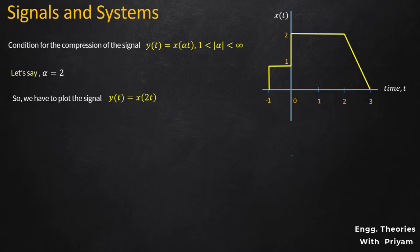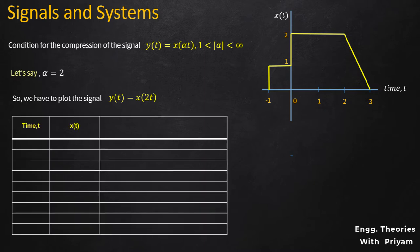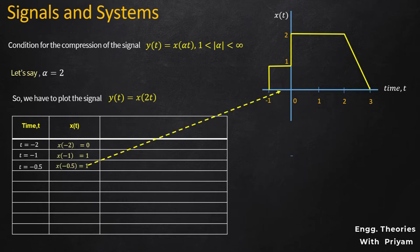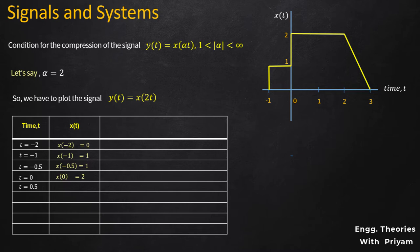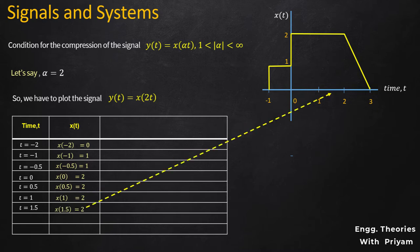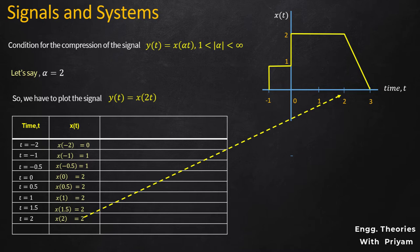We will make a table to observe different values of X(T) at different time instants. When T = -2, X(-2) = 0. When T = -1, X(-1) = 1. When T = -0.5, X(-0.5) = 1. When T = 0, X(0) = 2. When T = 0.5, X(0.5) = 2. When T = 1, 1.5, and 2, X(T) = 2. When T = 3, X(3) = 0.